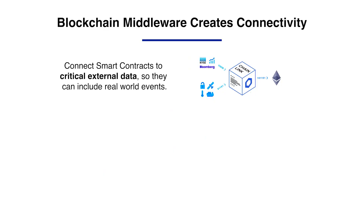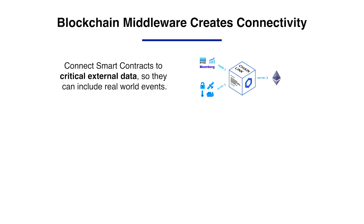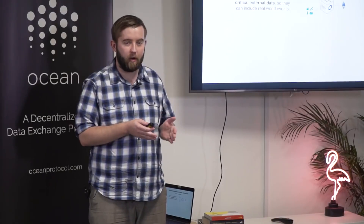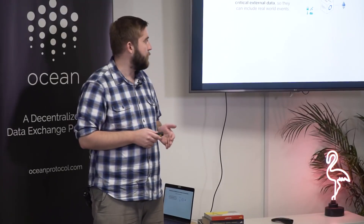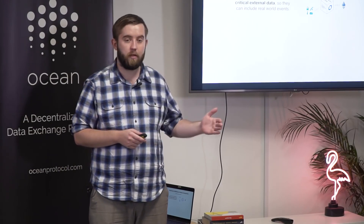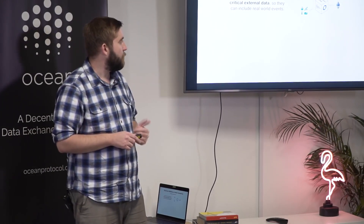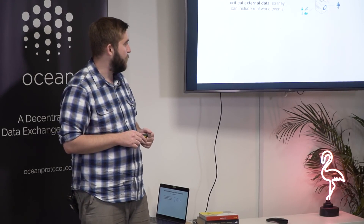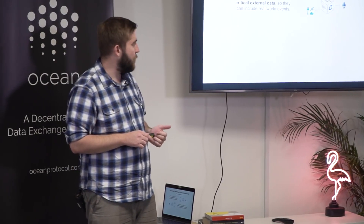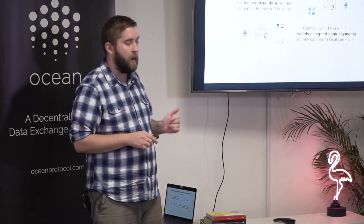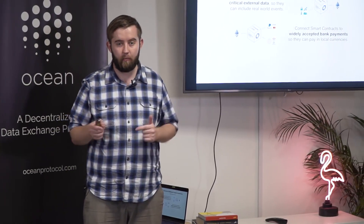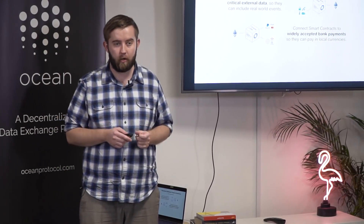The solution to that problem is blockchain middleware. Blockchain middleware sits between the smart contract network — where the digital agreement itself actually functions — and the external systems that the agreement needs to know about. Basically what we focus on is providing data and payments as inputs and outputs to smart contracts.